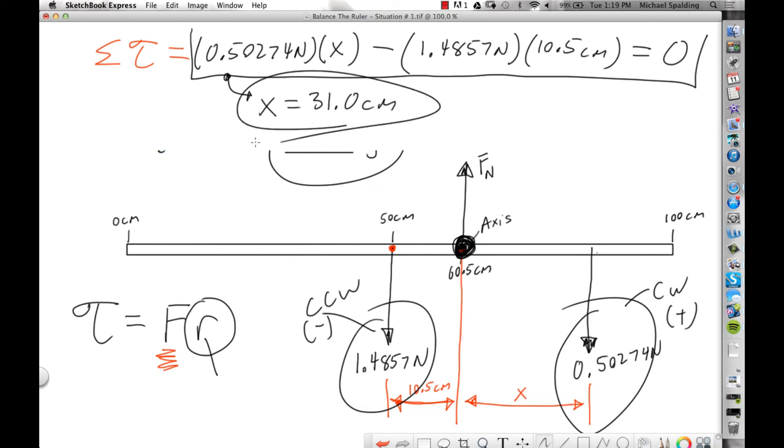So is that where we hang the mass? No. What that's telling us is 31 centimeters from where? Not from the center. From the axis. So you go 31 centimeters this way. Keep in mind, this was 60.5. So 60.5 plus 31 centimeters is what? 91.5 centimeters.